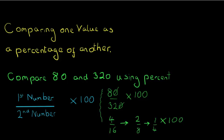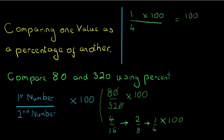We have to work out 1 over 4 times 100. Let me remind you of the method of multiplying a fraction by a number. If I've got a fraction — in this case 1 over 4 — and I'm multiplying it by 100, what I like to do visually is extend that fraction line. That reminds me I'm only multiplying the top value by 100, not both top and bottom. So 1 times 100 is 100, and the bottom value stays the same: 4.